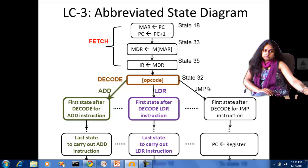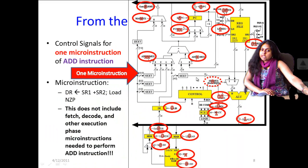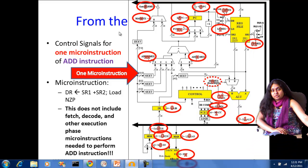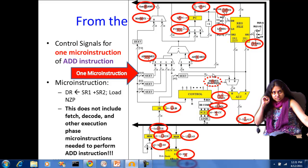If you look at the LC3 hardware picture and examine the values of the control signals during the execution phase of the ADD operation, you will see that a single micro instruction corresponds to a particular state in the hardware. This does not include the fetch stage, decode stage, or other execution phases.